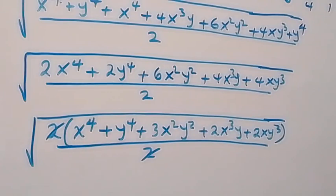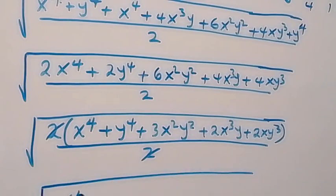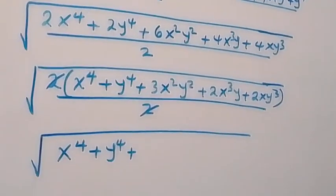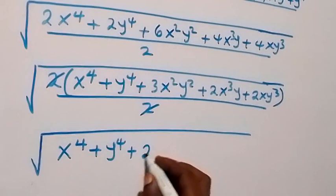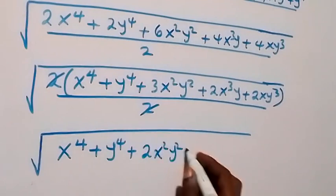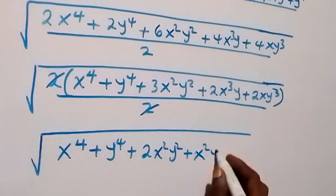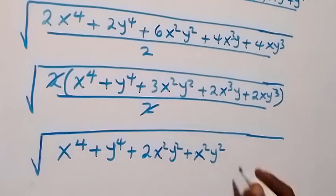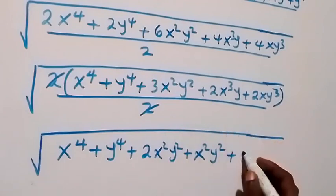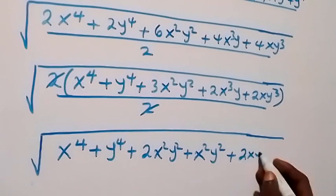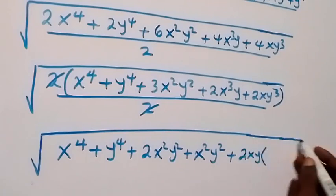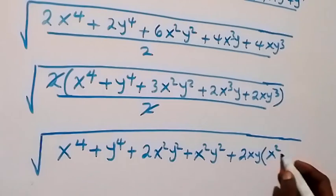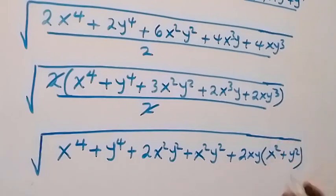Once we have this, we get the square root of: x raised to power 4, then plus — let's break this down as 2x squared y squared plus x squared y squared, still giving us 3x squared y squared — then plus what we have here. We can factor 2xy out, and this gives us x squared plus y squared, close bracket.